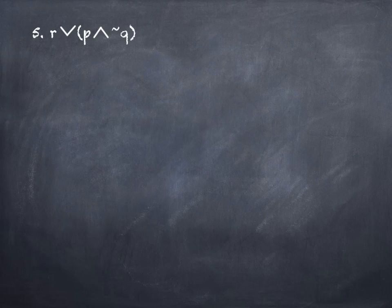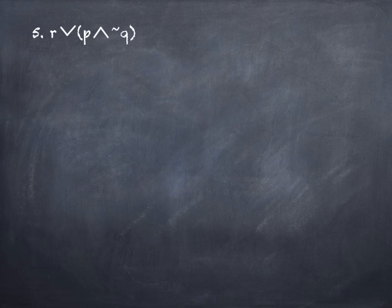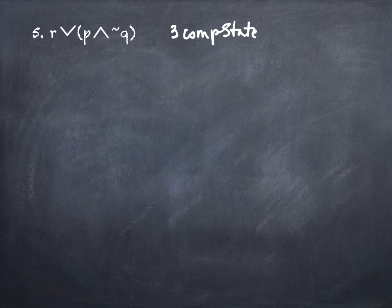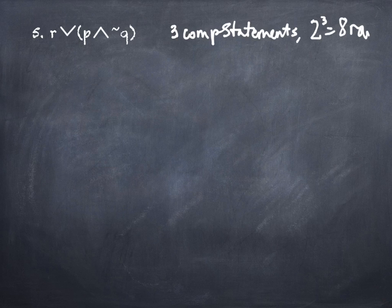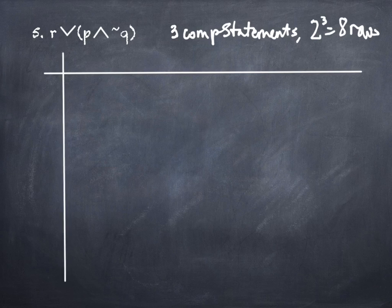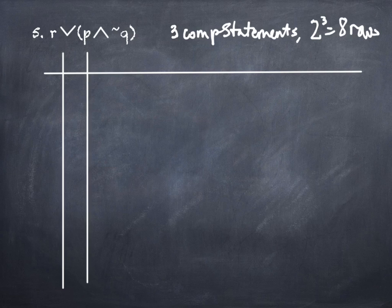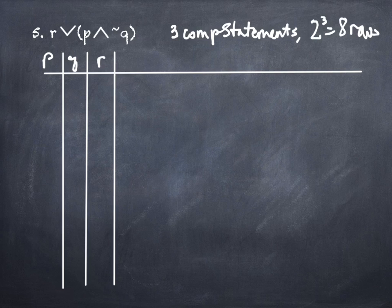Problem 5 has three different letters, so there are three component statements. That means 2^3 = 8 rows. We set up columns for P, Q, R, and tilde Q, then the combined expression P ∧ tilde Q, and finally R ∨ (P ∧ tilde Q). Let's fill in all the T's and F's.